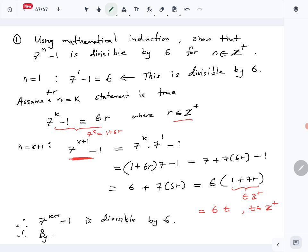7^n - 1 is divisible by 6 for all n belongs to positive integers. That is the answer for part A, first question. Next, we will look at the second question.